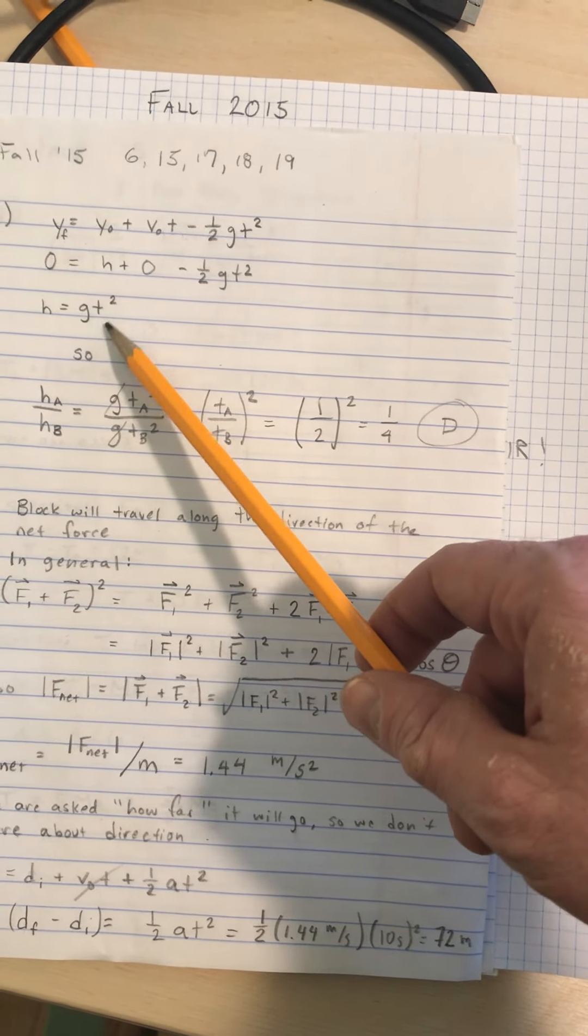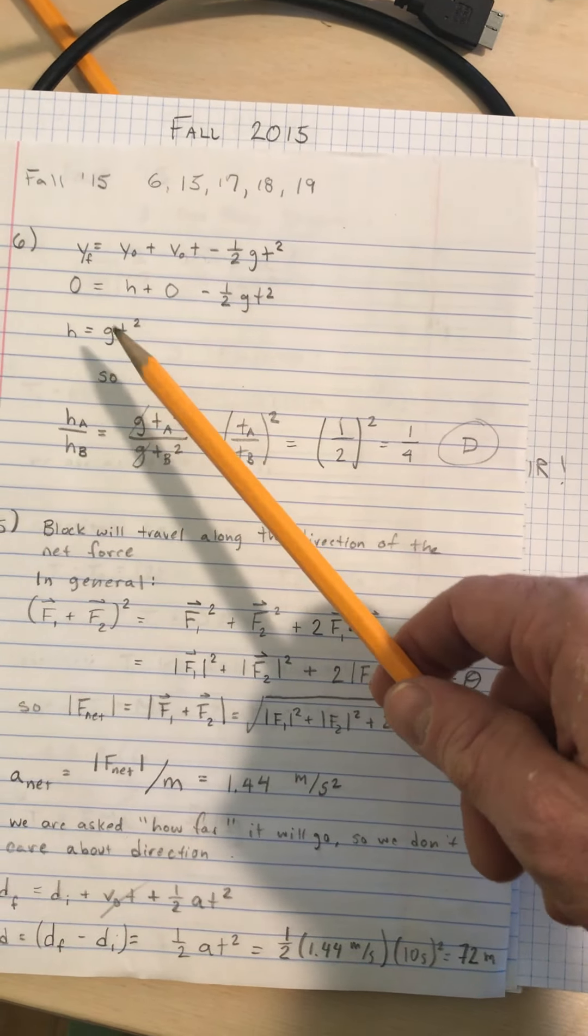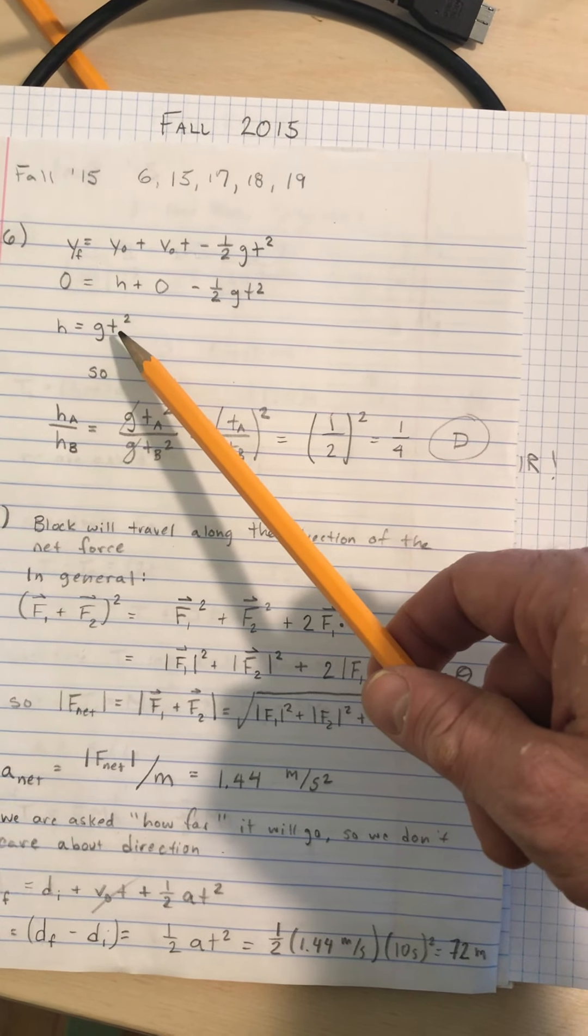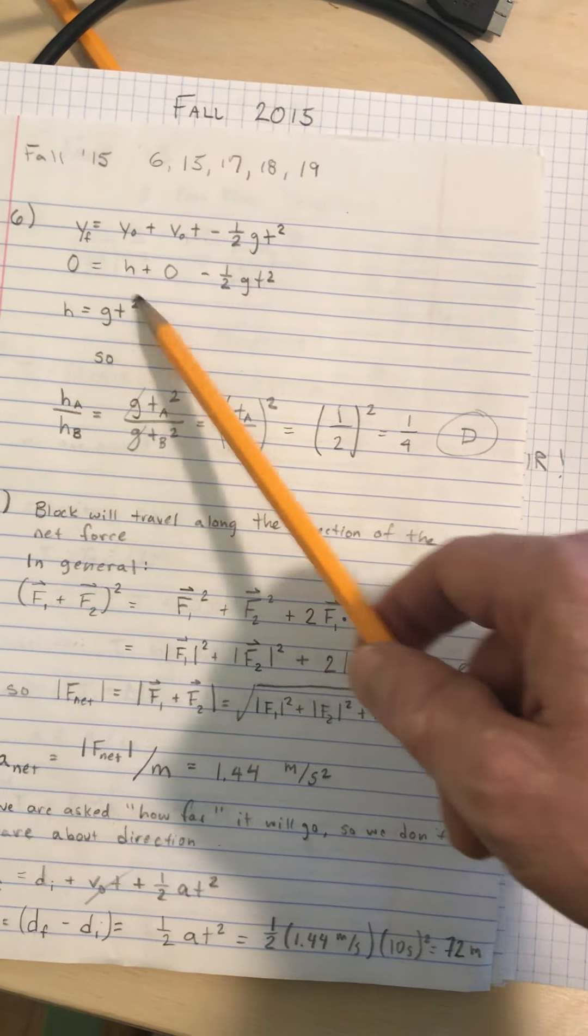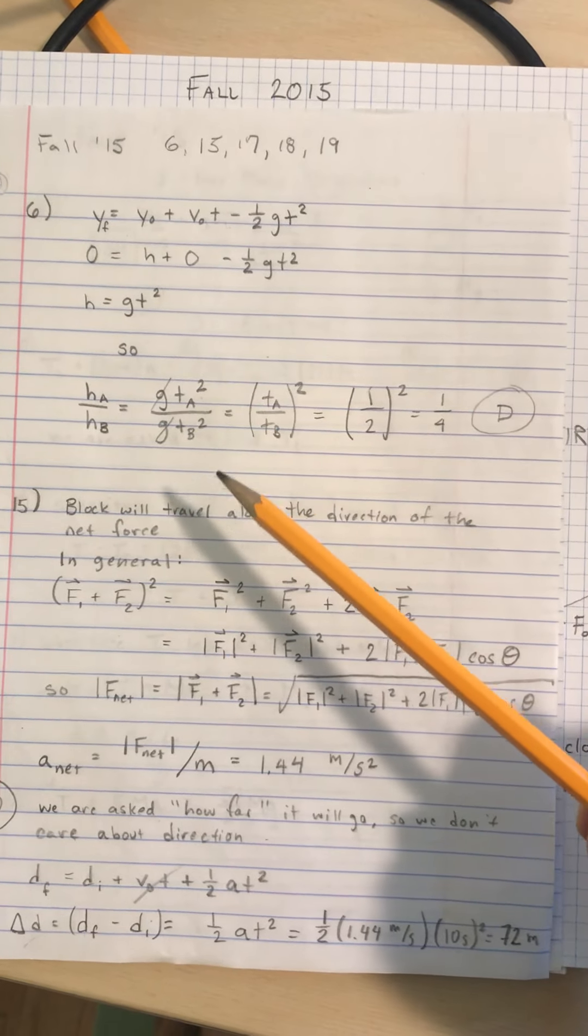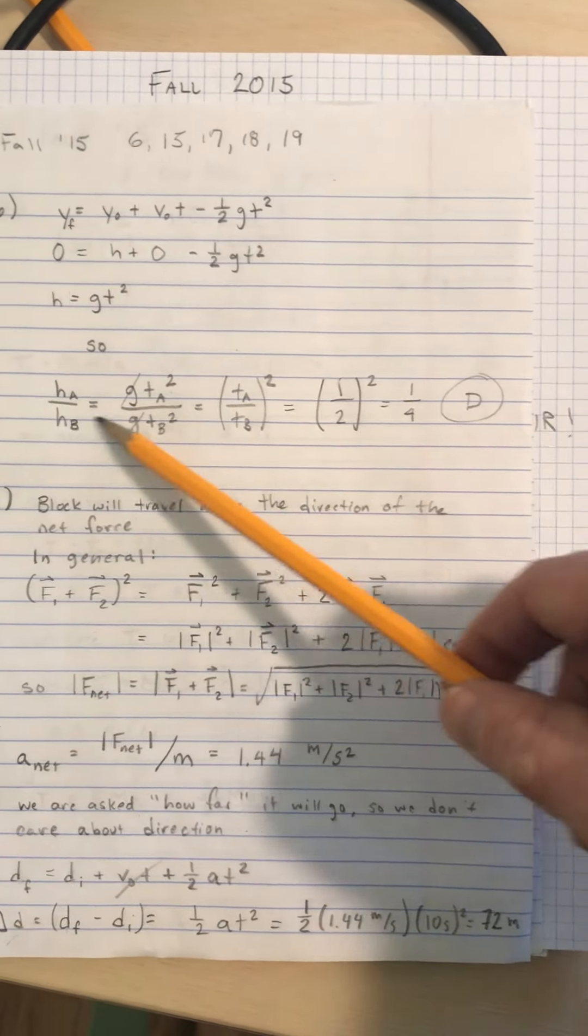Already you know, out the gate, we know that if it takes twice as long to fall then it's four times as high, just from that squared relationship. But let's do it brutally, let's just do the math in its full glory.